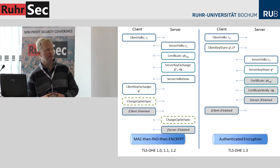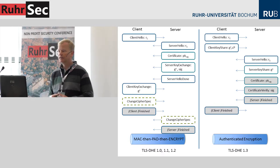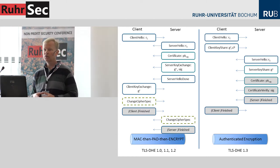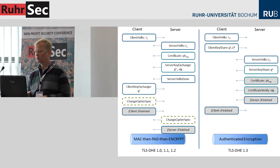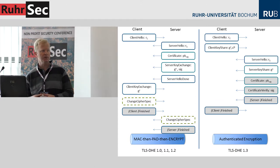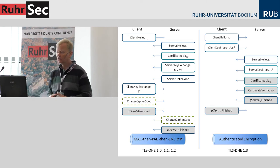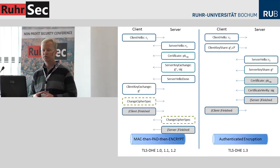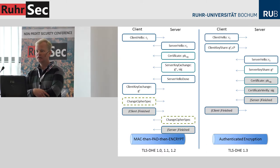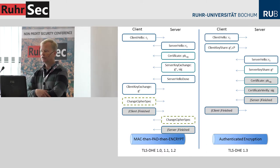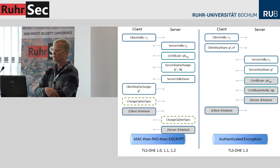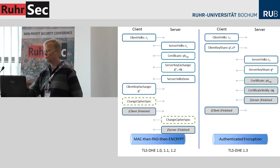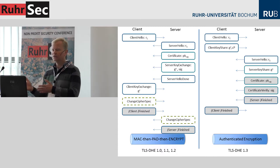The grey messages shown here are the encrypted messages. Formally, only the finished messages were encrypted in the old version — there was no real reason for that; the protocol would be equally secure without it. In the new version it makes sense. You can hide the server identity and also the client identity. For example, you can use TLS with client authentication over Tor and this will not reveal your identity, whereas the old version would immediately reveal it because the client certificate was sent in the clear.